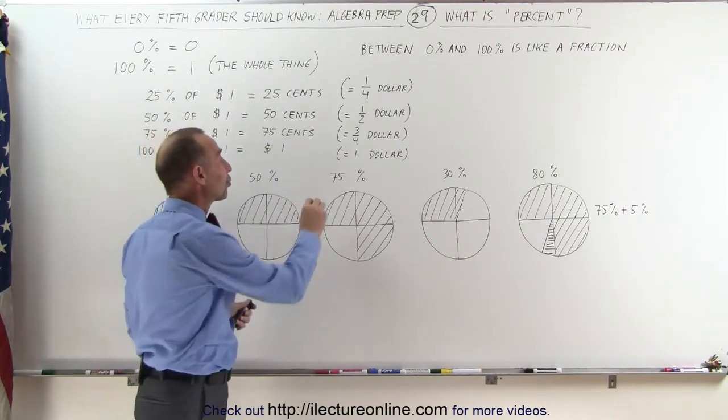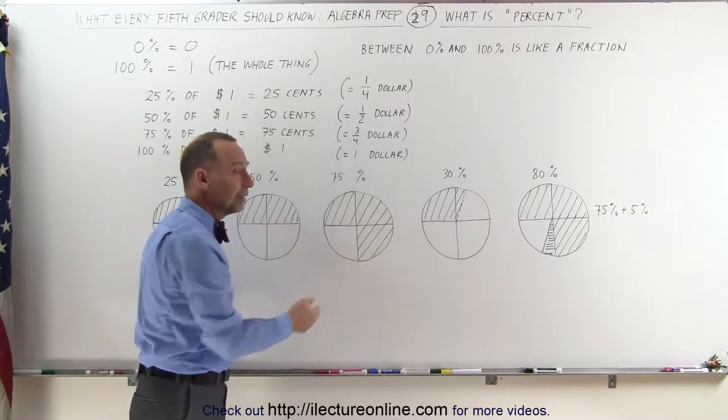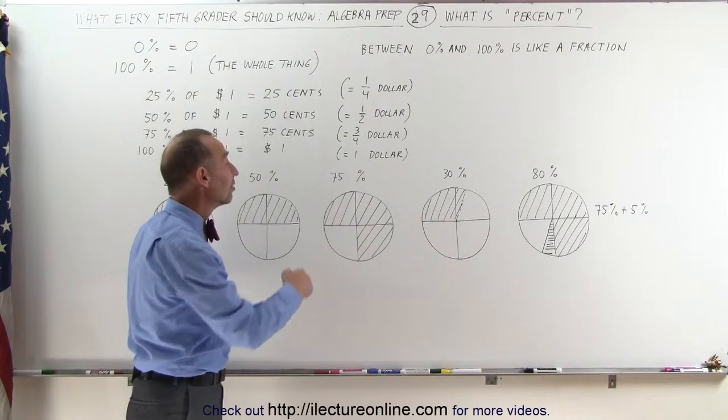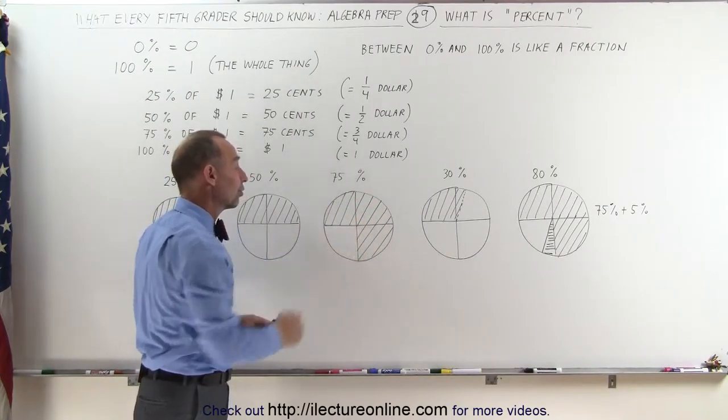75% means I have three quarters of the whole thing. 75% means I have three quarters of 100%. 75% means I have three quarters of the pie.